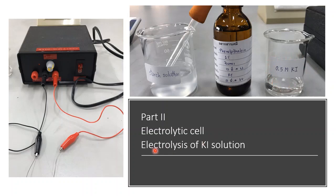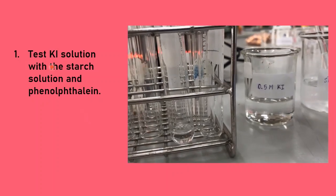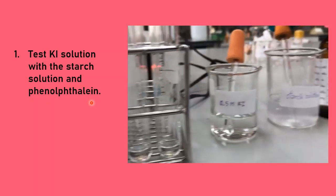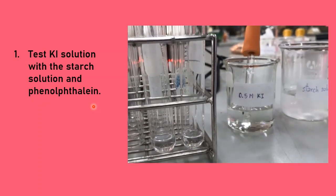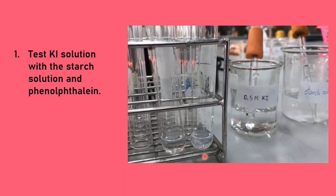We want to observe the electrolysis of potassium iodide solution and check exactly what the oxidation reaction, reduction reaction, and overall redox reaction are. We're going to use two reagents to check the products: starch solution and phenolphthalein solution. First, test the potassium iodide solution with starch and phenolphthalein without any electricity applied.